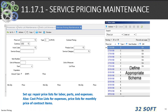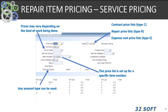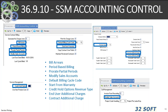These are controlled by the price list and the amount type. When items are consumed in CAR, the item searches for the price list specified on the call header for each item. If no price is found, it defaults to the item list price from the item master. If the item is not defined in the item master, the price equals zero. The 36.9.10 SSM accounting file covers such elements as billing in arrears, period-based billing, prorating partial periods, modifying sales accounts, billing cycle codes, start-from calculation, end-user additional charges, and contracts. You should understand these elements, and we will have a webinar on this in November for contract pricing.